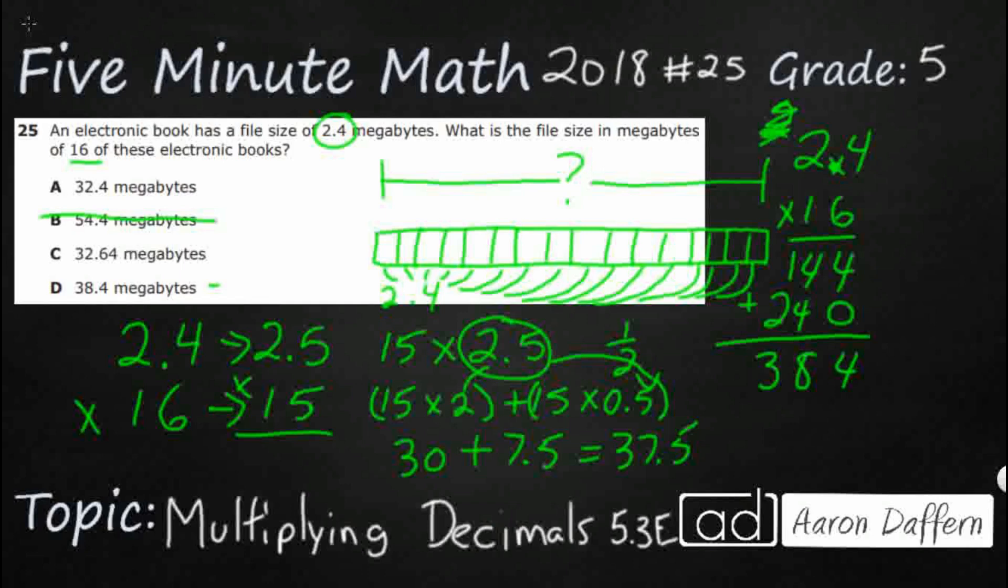Remember, this was 2.4 or 2 and 4 tenths. When you multiply decimals, you don't worry about lining them up. You simply multiply like normal. When you get to the product, which we have 384, you check to see how many digits are behind the decimal in all the factors. So I've got one digit behind the decimal here. I don't have any digits behind the decimal in 16 because it would be 16.0. There's nothing back there. So I've got one digit behind the decimal in my factors. So I need to bring my decimal in one spot. So there's one digit behind the decimal. My answer is D.